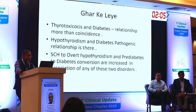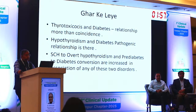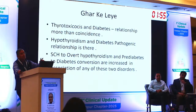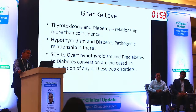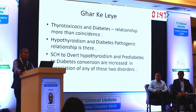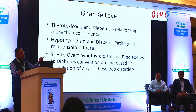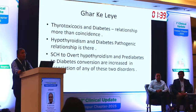There is a pathogenic relationship between hypothyroidism and diabetes. Conversion from subclinical to overt hypothyroidism and from pre-diabetes to diabetes are both increased when both disorders are present. If a hypothyroid patient has pre-diabetes, the chances of conversion to overt diabetes are much greater — and similarly, in a diabetic patient with subclinical hypothyroidism, chances of conversion to overt hypothyroidism are also increased.